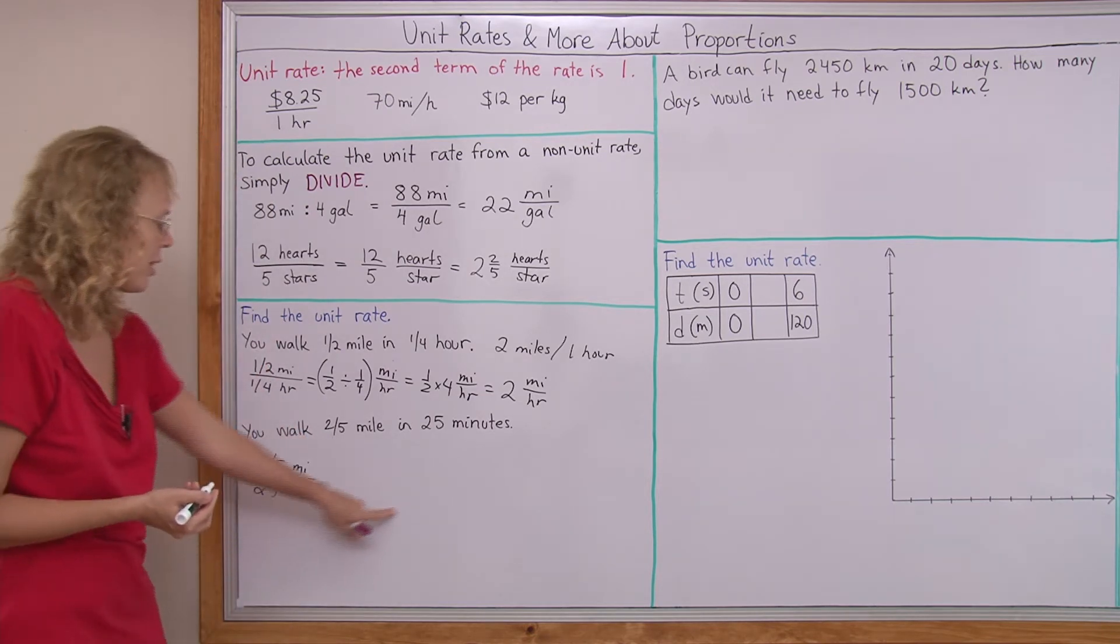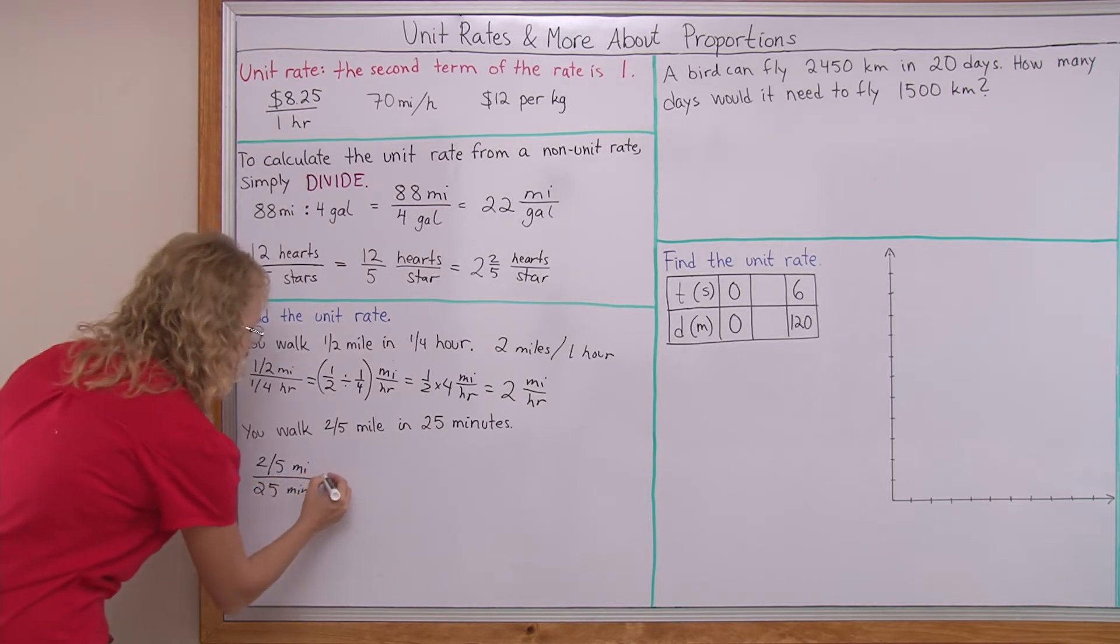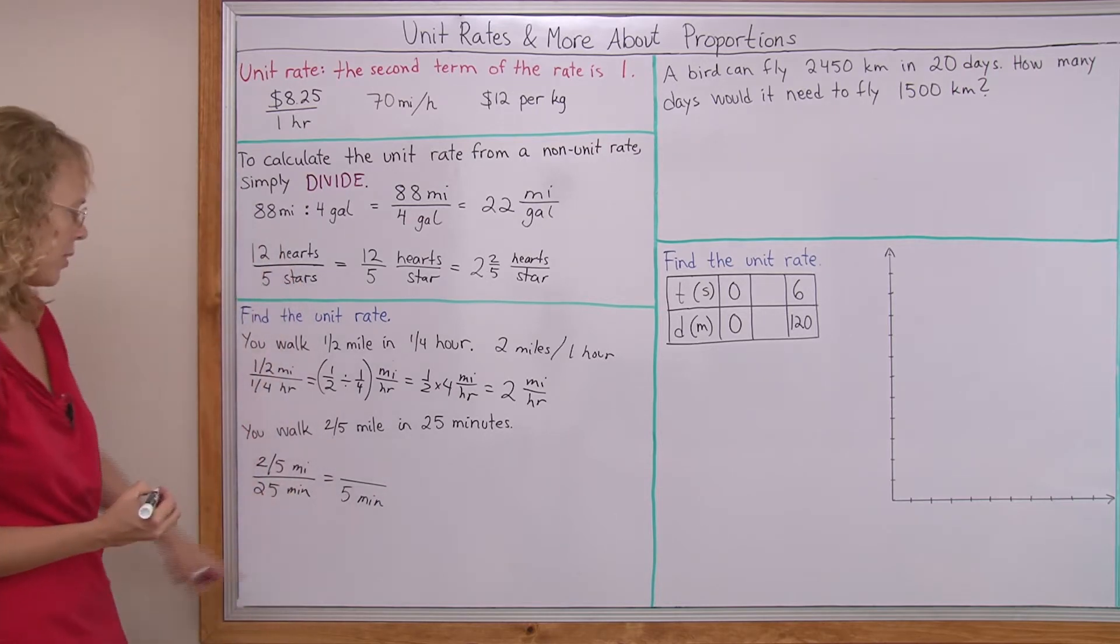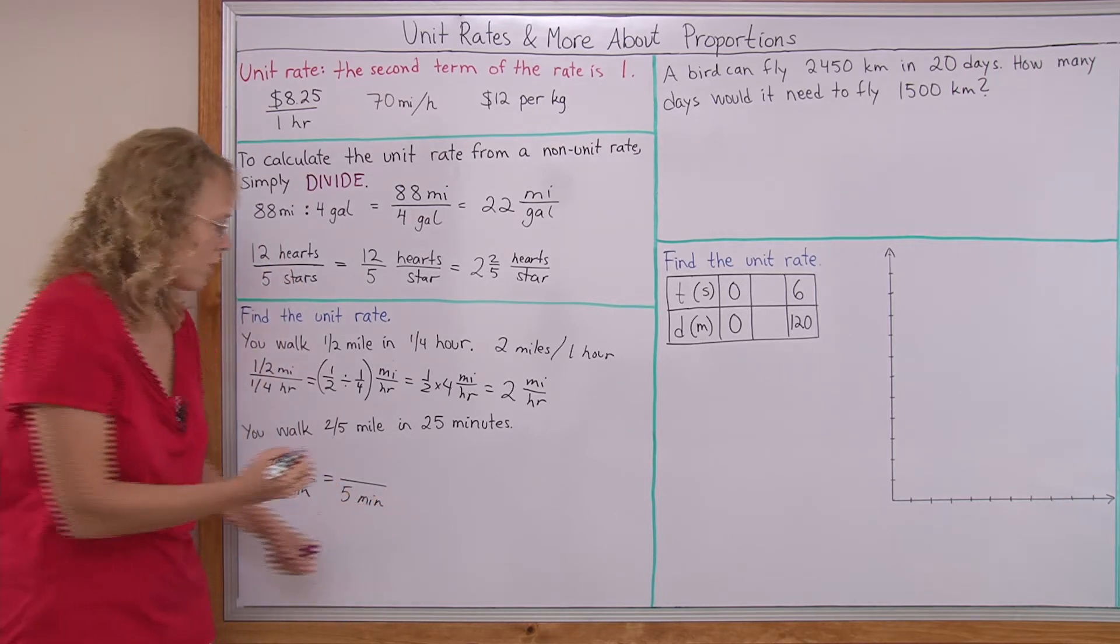But 25 minutes doesn't go evenly to 60 minutes. I cannot simply multiply this by two. But what I will do is, I will find the rate per five minutes first. And then from there, I go to the 60 minutes.